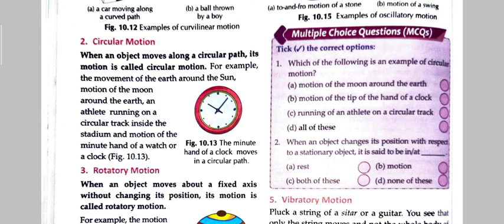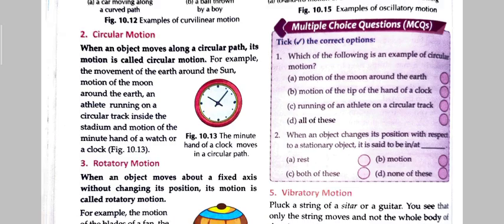Now we will talk about circular motion. When an object moves along a circular path, its motion is called circular motion. For example, the movement of the earth around the sun, motion of the moon around the earth, an athlete running on a circular track inside the stadium, and motion of the minute hand of a watch or clock. Example ke taur pe circular path pe — earth jo hai sun ke chaaro taraf round lagata hai, moon earth ke chaaro aur round lagata hai, ek athlete jo hota hai circular stadium mein chaaro taraf ghoom raha hai, ya clock ya watch ki minute ki needle — yeh saara kuch.